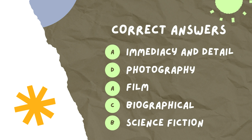And here are the correct answers. Now I want you to count your correct answers and then circle your score. For those who got five — excellent! For those who got four — very good! For those who got three — good! For those who got two and below — it's okay, you can rewatch the video to review the lesson.